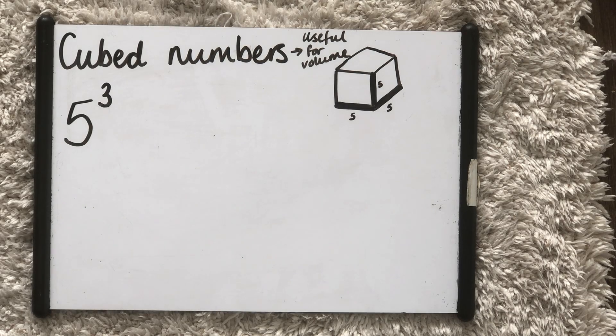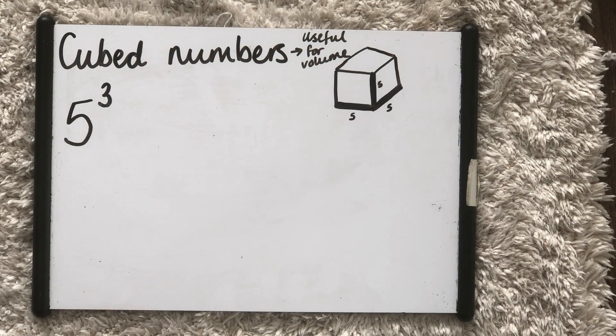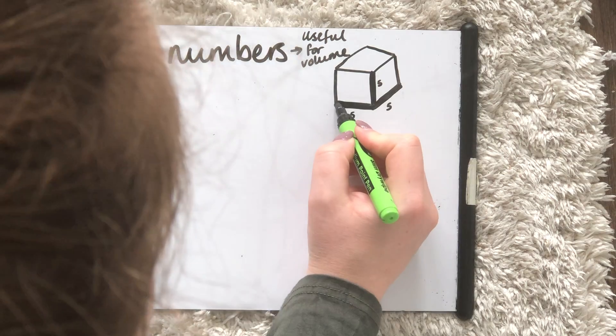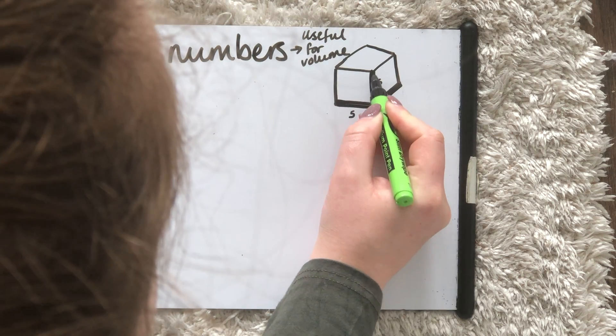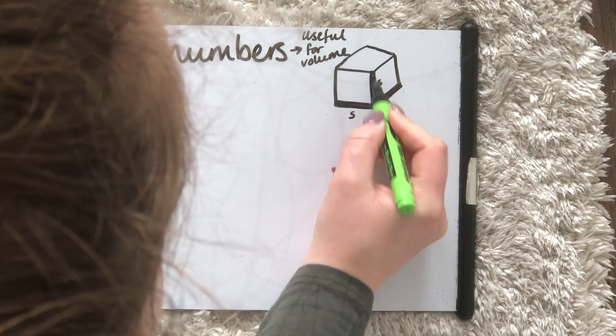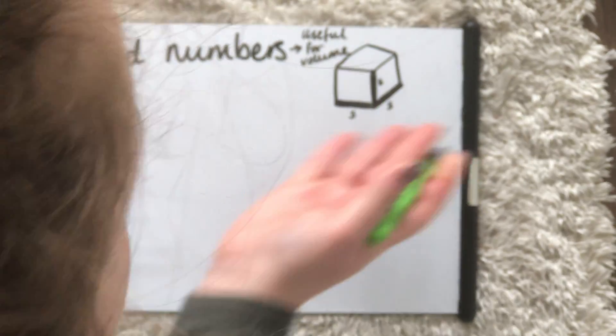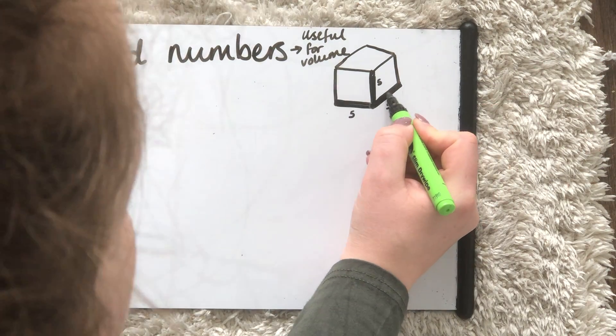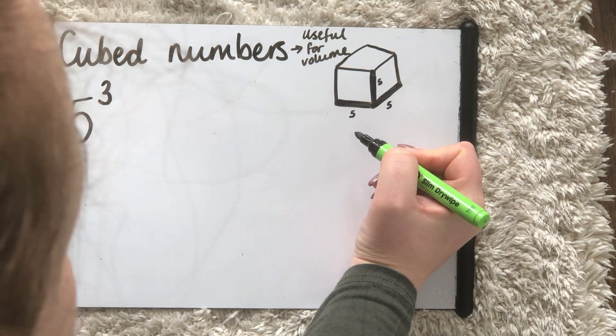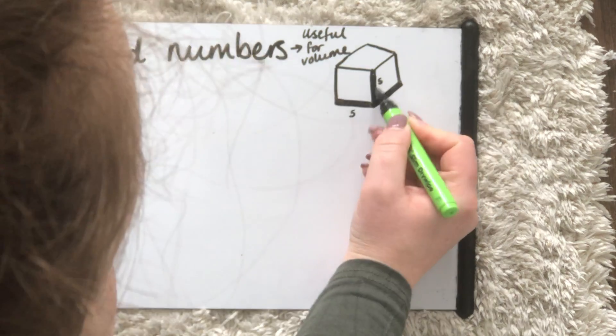Cubed numbers are quite useful for volume. Obviously this time we've still got our square. If you look at my sides here, we've still got our 5 times 5, but then this time it's 3D, it's a 3D cube. So we have to then extend it out as well, so now we've got 5 times 5 times 5.